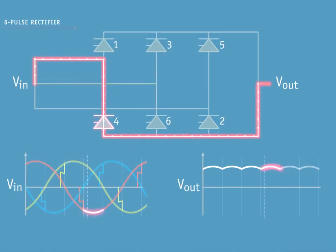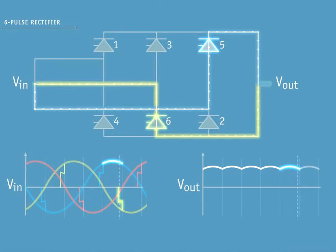This explains the concept of how a six-pulse rectifier converts AC to DC. Although TransPower uses 12-pulse mode, the same principles apply.